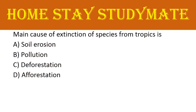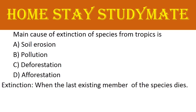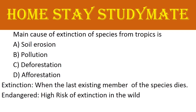Next: the main cause of extinction of species from tropics — options are soil erosion, pollution, deforestation, or afforestation. Extinction is when the last existing member of a species dies. Endangered means a high risk of extinction in the wild. These two terms are correlated. The right answer is deforestation.